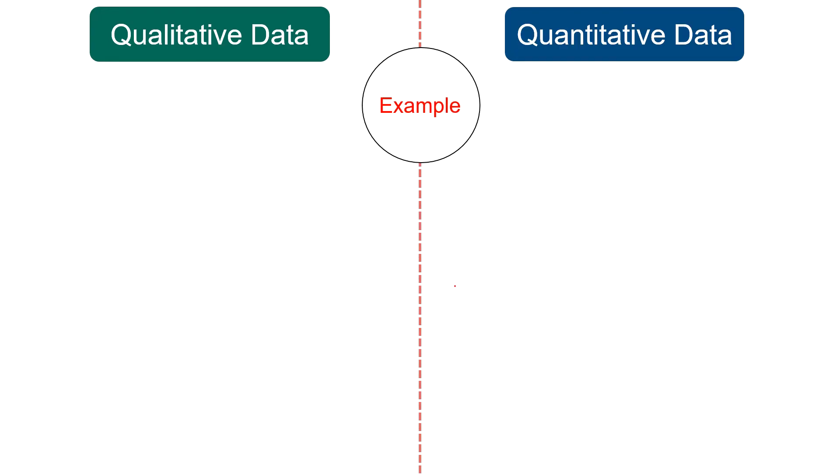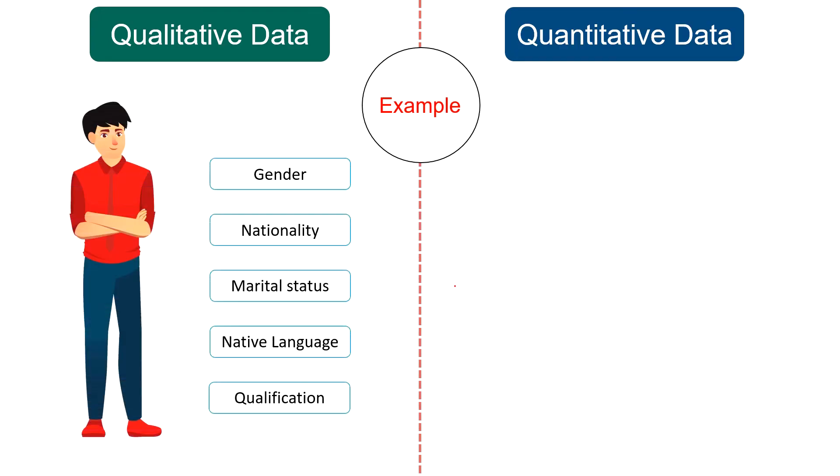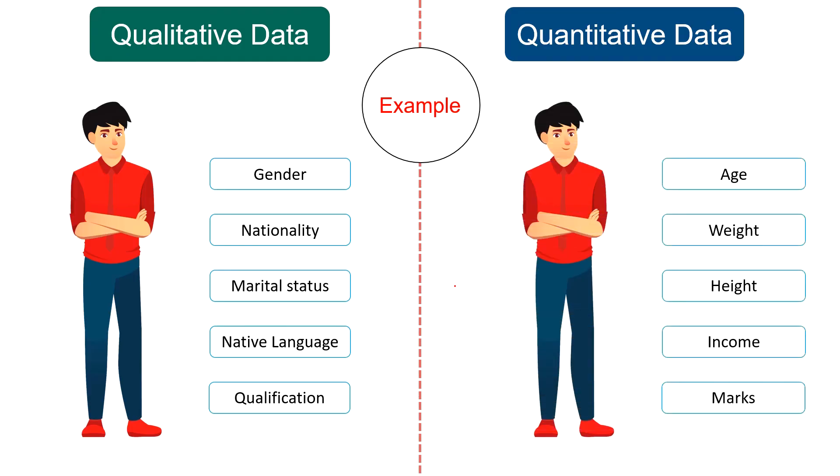Next, example: Qualitative data can be gender, nationality, marital status, native language and qualification of a person. Whereas quantitative data can be age, weight, height, income and marks of a person.